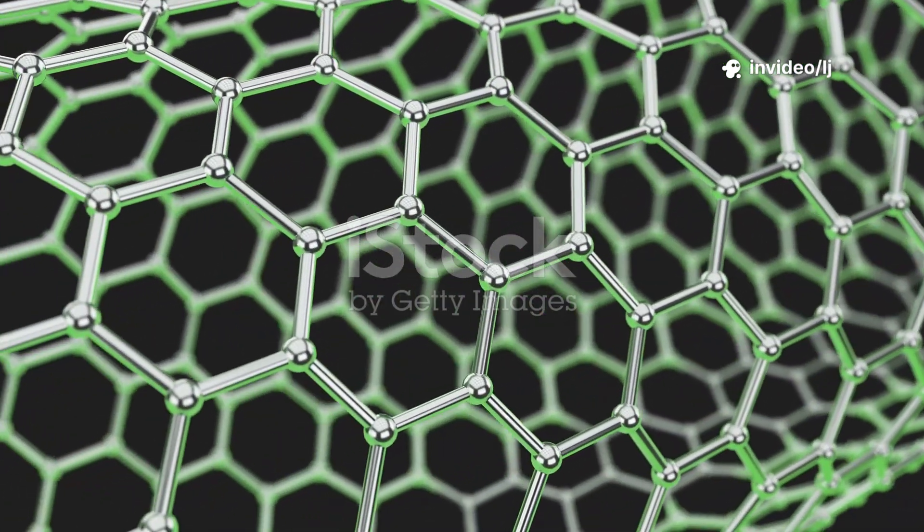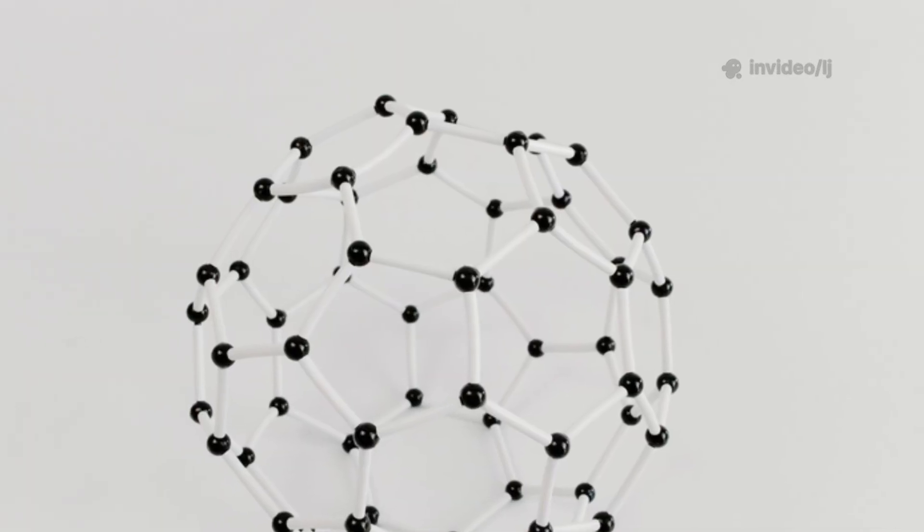What if I told you there's a material stronger than steel, thinner than paper, and more conductive than copper? It's called graphene. And it's about to change everything.